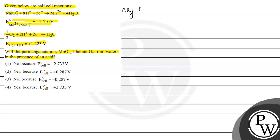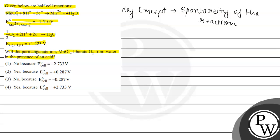The key concept of this question is spontaneity of the reaction. We can find whether a reaction is spontaneous or non-spontaneous with the help of electrode potential. Spontaneous reactions are those which actually favor the formation of the product at the condition of the reaction occurring.